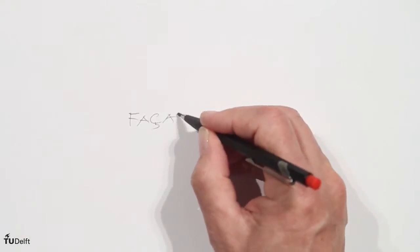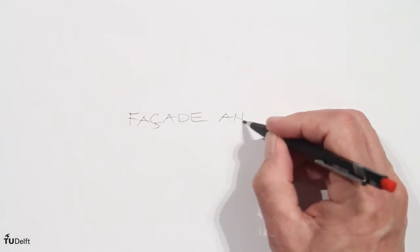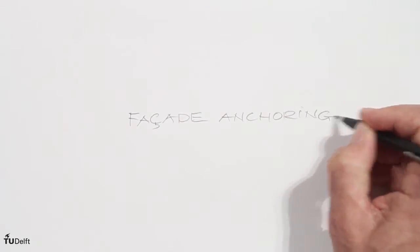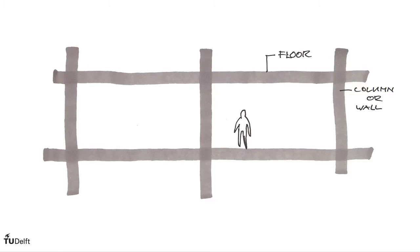In this video I want to explain some issues related to the anchoring of facade elements. The drawing shows a fragment of a structure with floors and support in walls or columns.